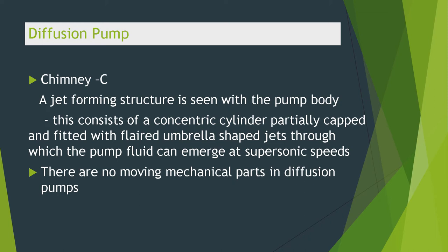A jet-forming structure is seen within the pump body. This consists of concentric cylinders, partially capped and fitted with flat umbrella-shaped jets, through which the pump fluid can emerge at supersonic speeds. This is the chimney, represented in the figure as C. There are no moving mechanical parts in the diffusion pump.